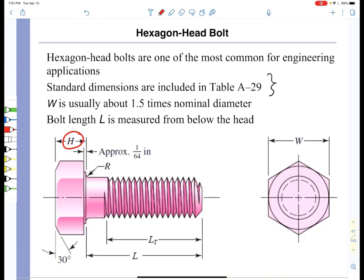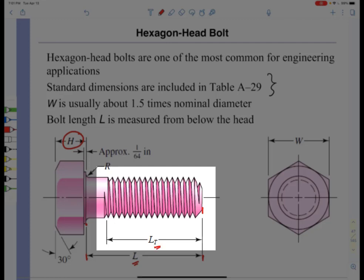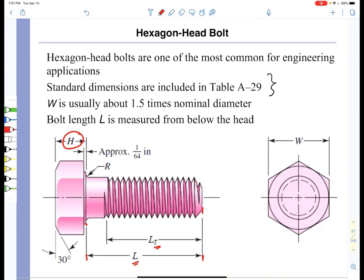It has an overall length that goes from the end of the bolt to the washer face, called capital L. Then there is a threaded length. Sometimes bolts are fully threaded, but oftentimes they are not fully threaded. So we need to consider both the overall length of the bolt and the threaded length of the bolt.